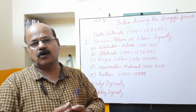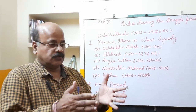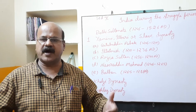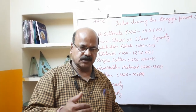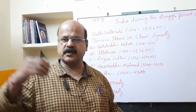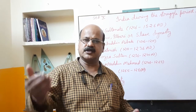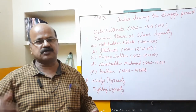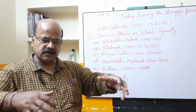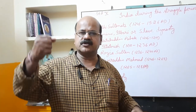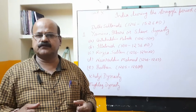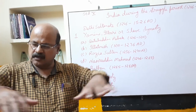Iltutmish was the son-in-law of Qutbuddin Aibak. He made the Slave dynasty very strong by waging wars across India after becoming Sultan. In 1223, he waged war against Malwa and won considerable territory. Then in 1226, he attacked Ranthambore in Rajasthan and annexed it. He then attacked Jalor and conquered the surrounding area, establishing the power and supremacy of the Delhi Sultanate in the surrounding regions.